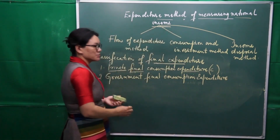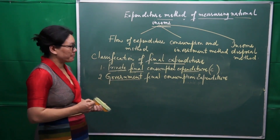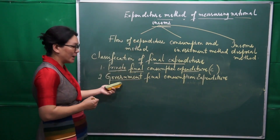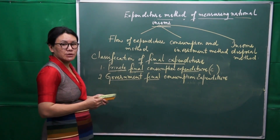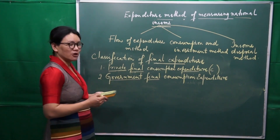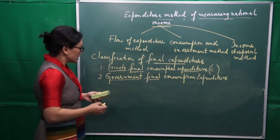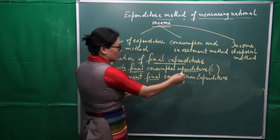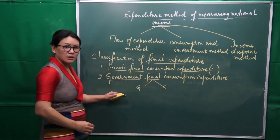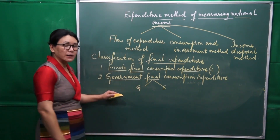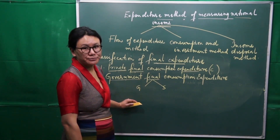Government Final Consumption Expenditure represents the expenditure made by the government on the purchase of final goods and services. The motive of the government is always for the welfare of the society, so the government incurs expenditure on final goods and services meant for the collective needs of the society.